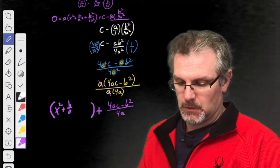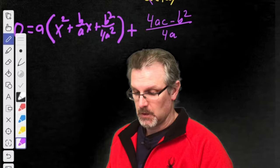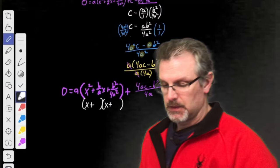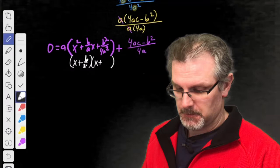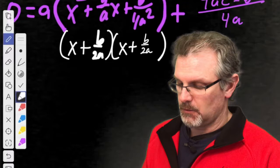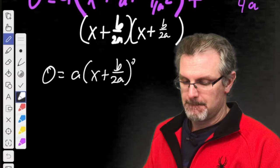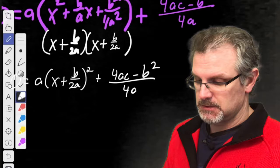Now let's go back: x squared plus b over a times x plus b squared over 4a squared, with an a on the outside, all equals zero. We need to factor this expression. This is x plus b over 2a, the whole quantity squared. Substituting back in: zero equals a times the quantity x plus b over 2a, squared, plus 4ac minus b squared all over 4a. By the way, that's vertex form — we've written standard form ax squared plus bx plus c in vertex form.